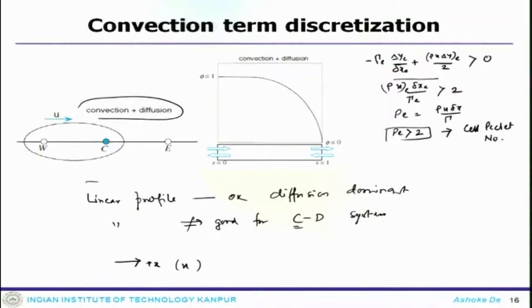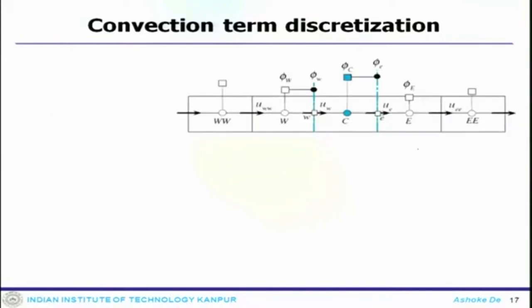For cell Peclet number greater than 2, the discretization process actually becomes inconsistent — an increasing neighboring value will lead to a decrease in the value of C. That is why you are getting significant error when convection dominates. This situation can be avoided by decreasing the grid size so the cell Peclet number is smaller than 2, or by using another scheme called the upwind scheme, which takes into account the direction. The central difference scheme has equal weightage, which is the problem. The upwind scheme actually accounts for the direction.